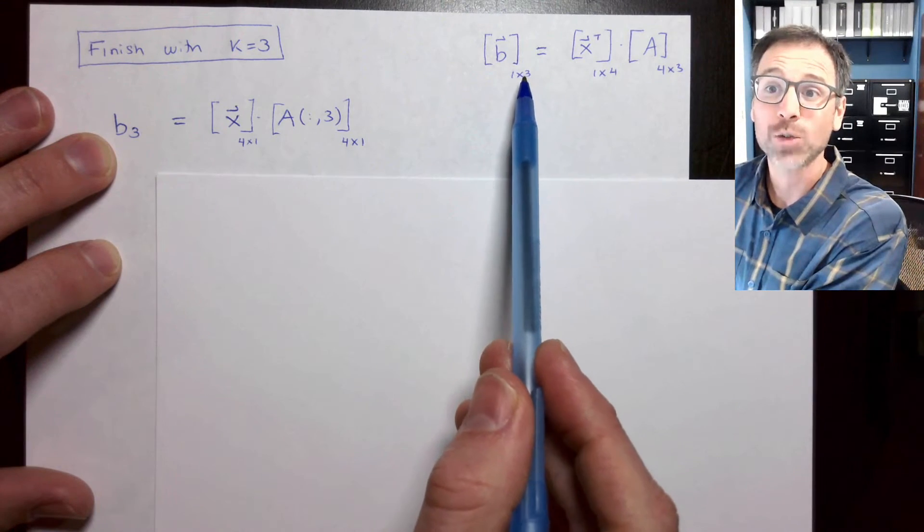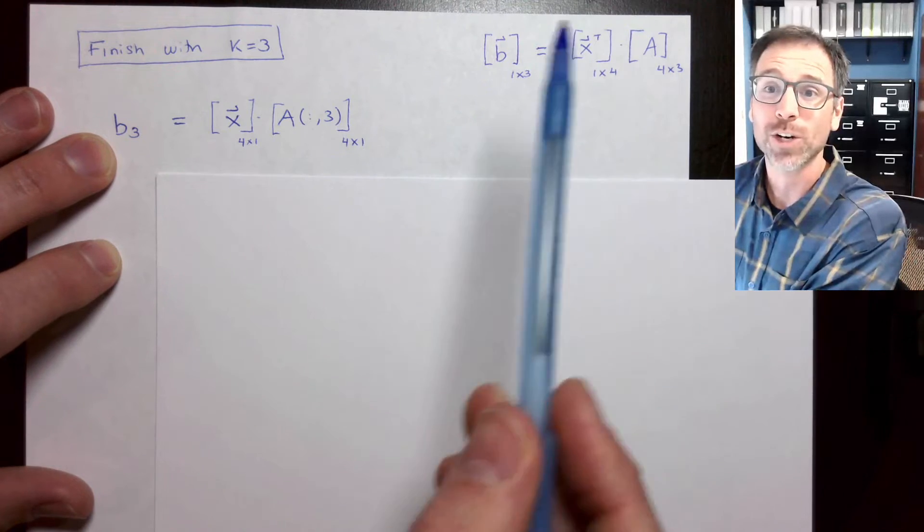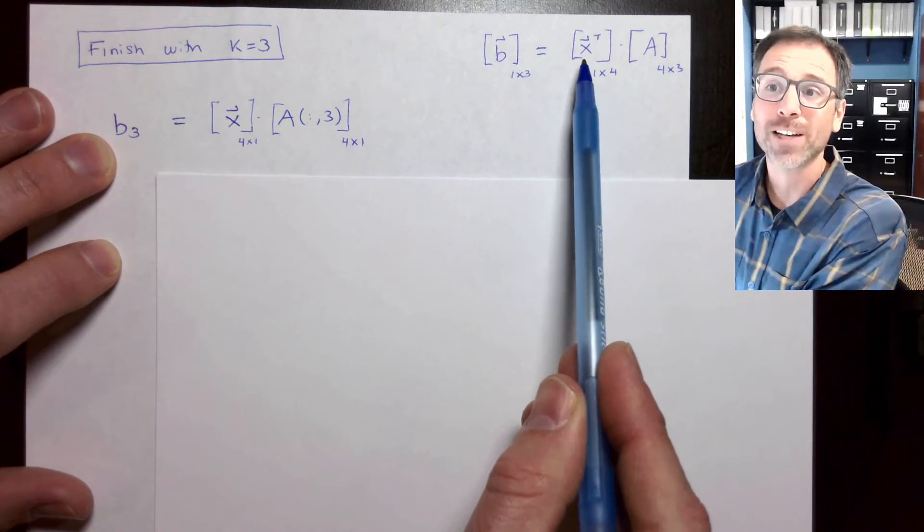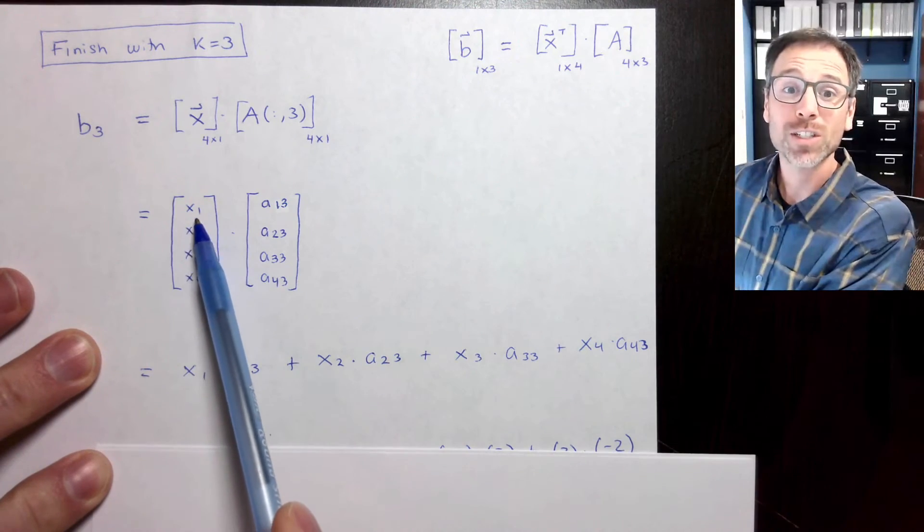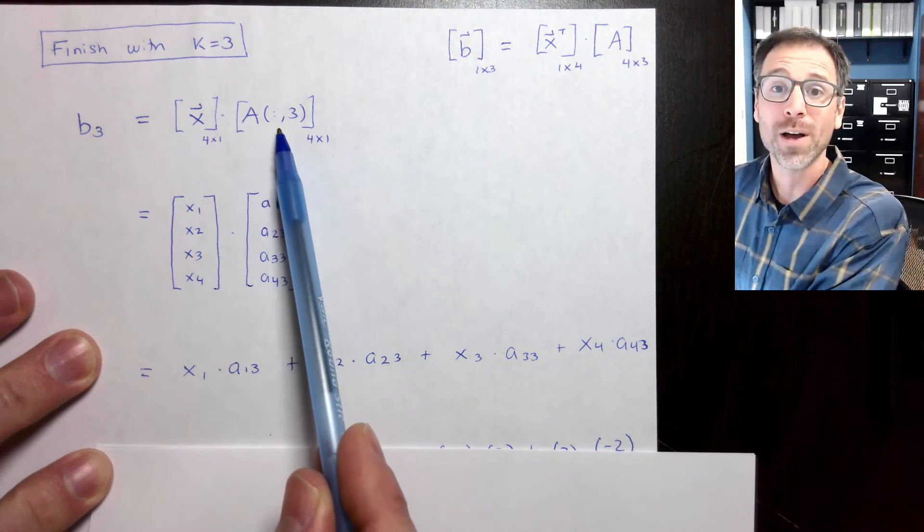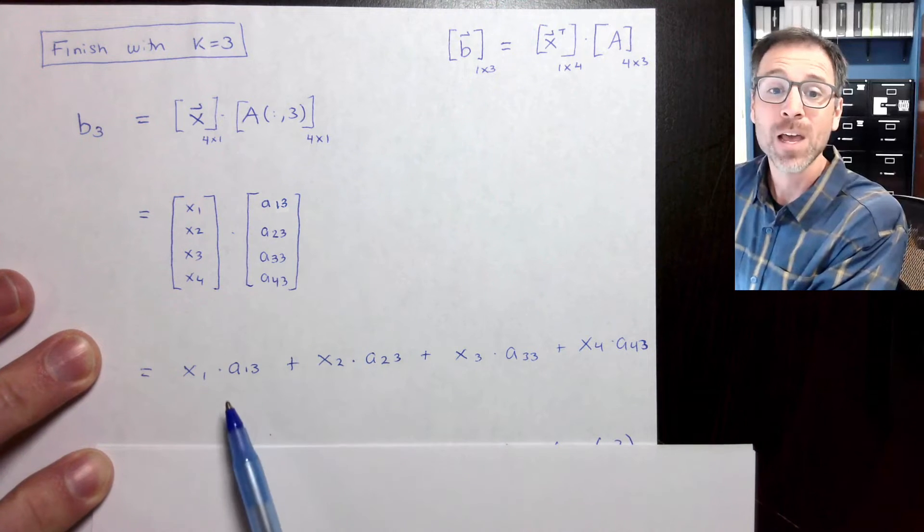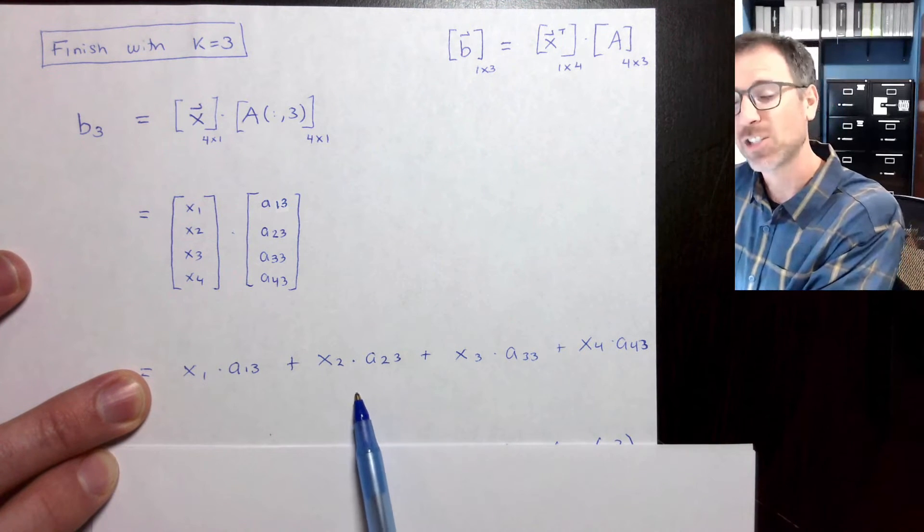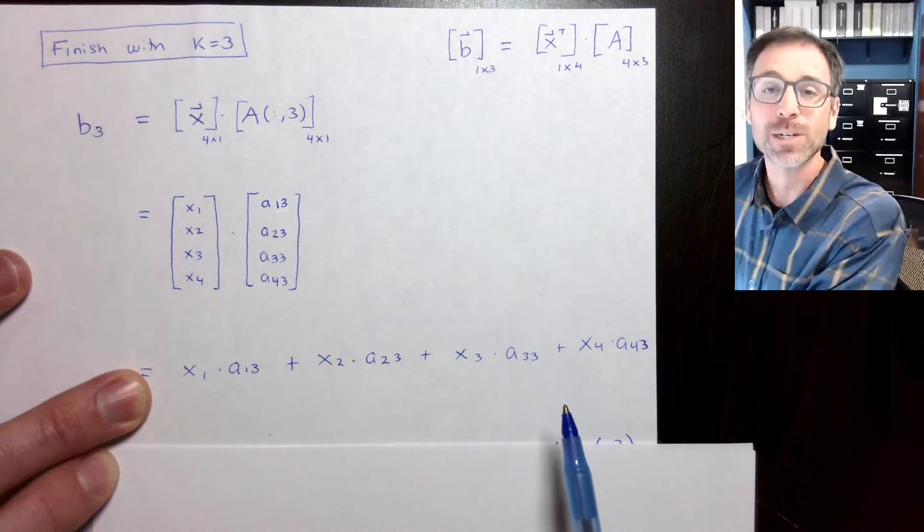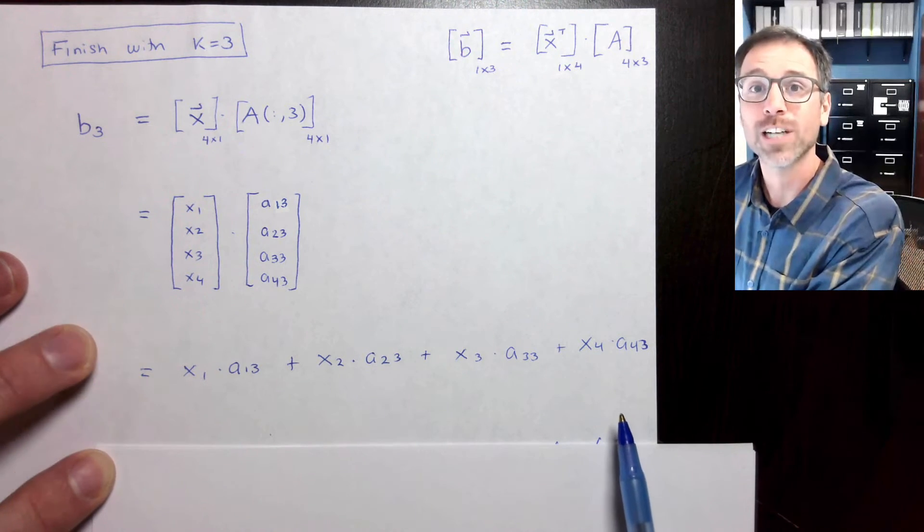Let's move on to our final entry in our vector b, which is going to be x transpose times A. That's going to be the vector x dot product with the third column of A. I know what each of those looks like since I know that x is a 4 by 1 and A is a 4 by 3. So here, b3 is going to be x1 times a13 plus x2 times a23 plus x3 times a33 plus x4 times a43.